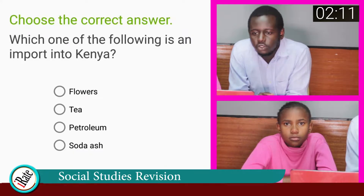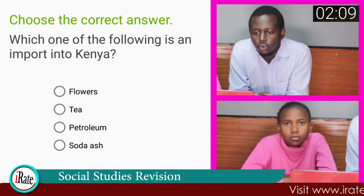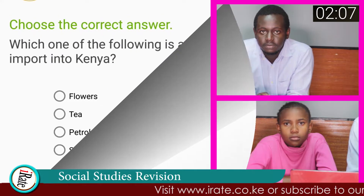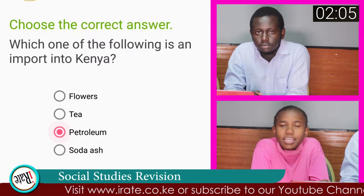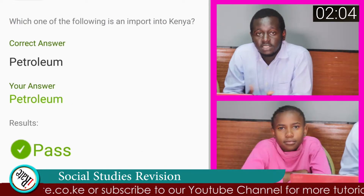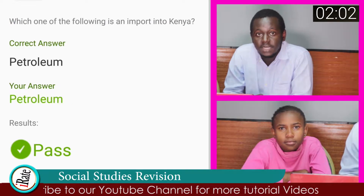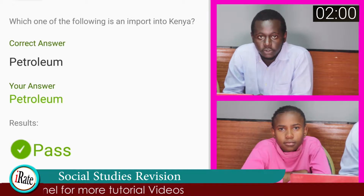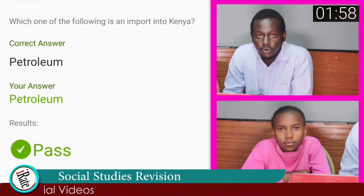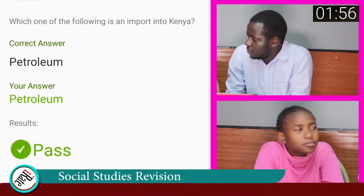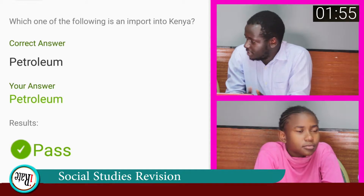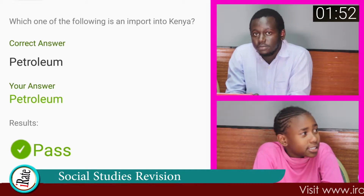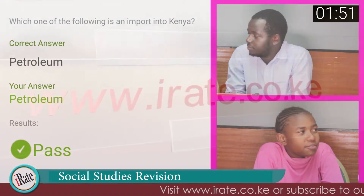Question number five: Which one of the following is an import into Kenya? The correct answer is Petroleum. Kenya is not able to produce Petroleum currently and that is why we import it. Student, what are some of the products that Kenya exports to other countries? Tea, coffee, and flowers.